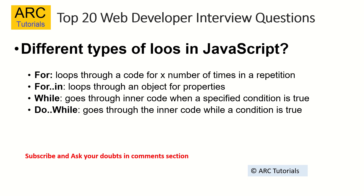What are the different types of loops in JavaScript? The different types are: for loop, while loop, for-in loop, and do-while loop. A for loop repeats code a certain number of times until a condition is achieved. A for-in loop iterates through object properties. A while loop executes the inner code when a specified condition is true. A do-while loop is similar but executes at least once — that is the key difference between while and do-while.